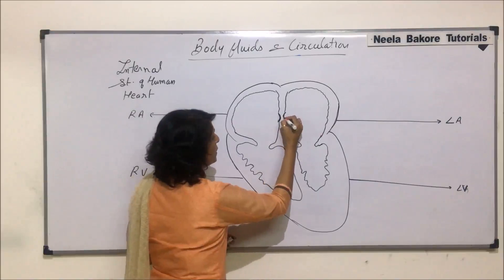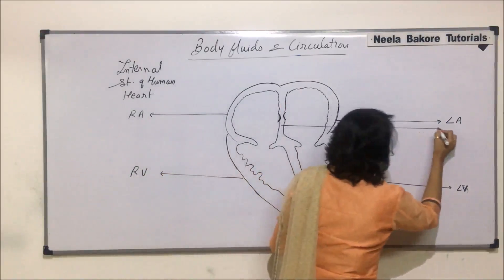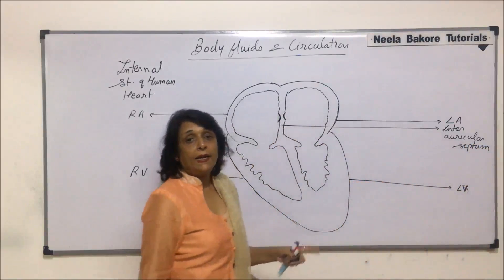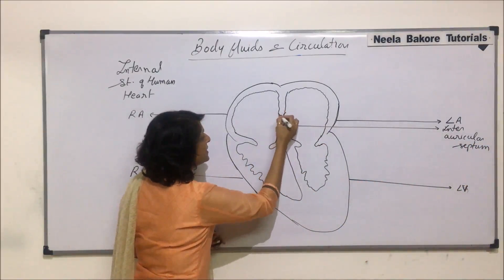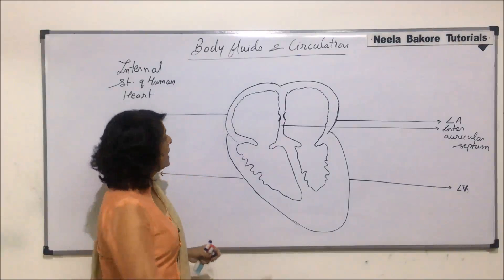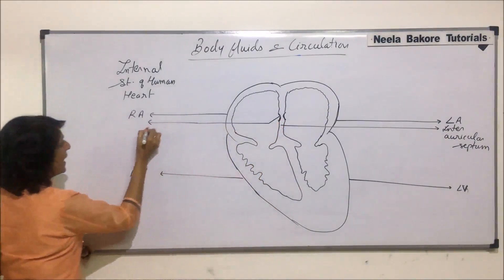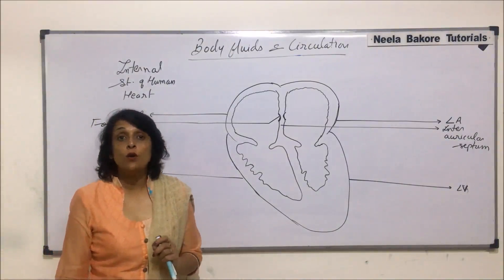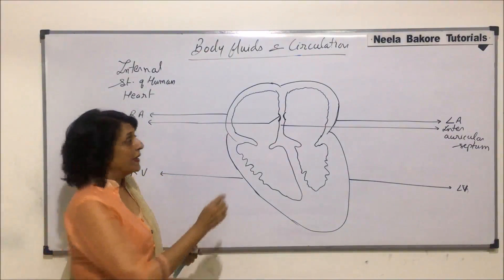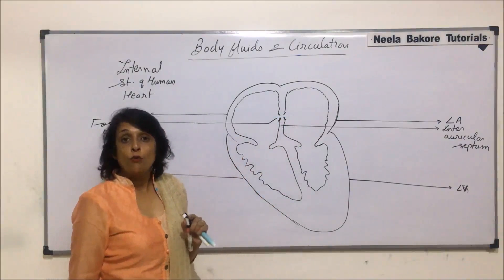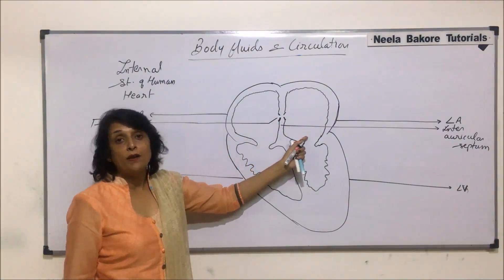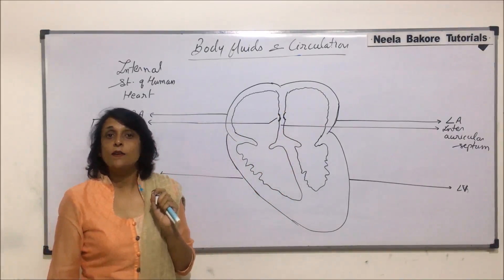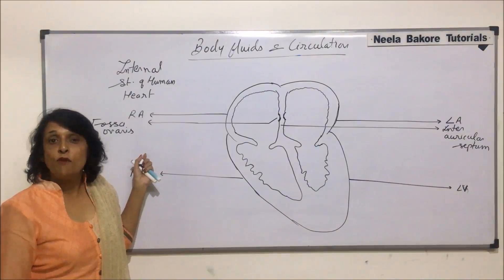The septum present between the two auricles is known as the interauricular septum. In this interauricular septum we see a depression, which is known as fossa ovalis. This is a remnant of the foramen ovale. In the embryonic stage there is an opening here known as foramen ovale, meaning mixing of blood takes place in the embryonic stage. But this opening closes at the time of birth, and a depression or scar remains — that scar is known as fossa ovalis.